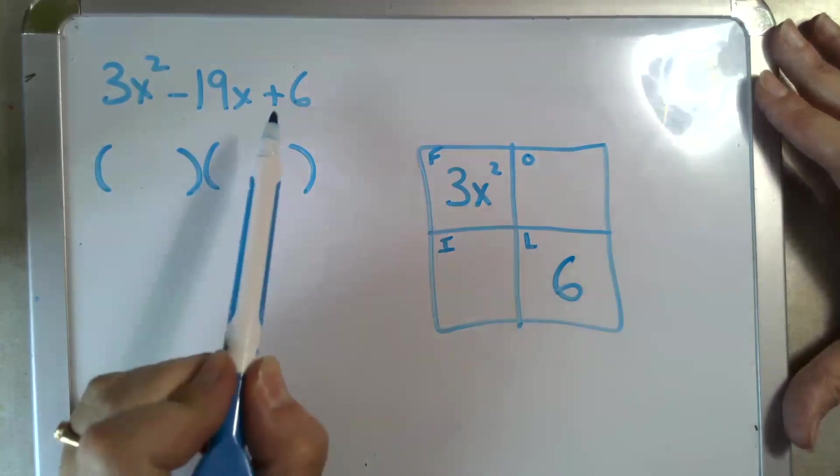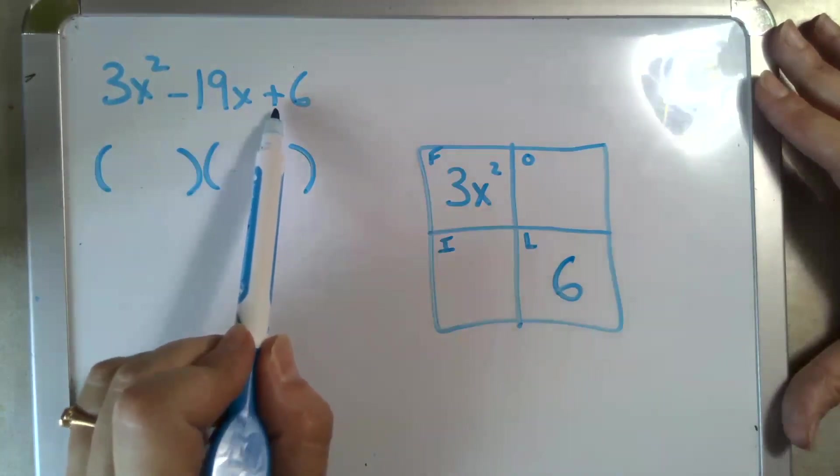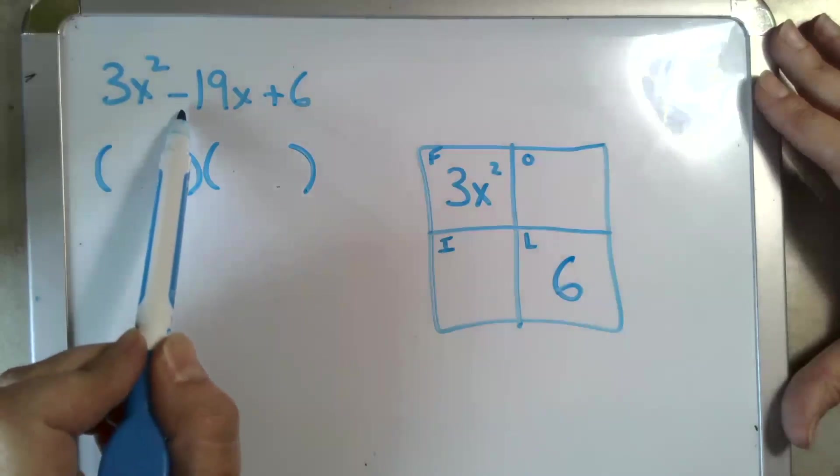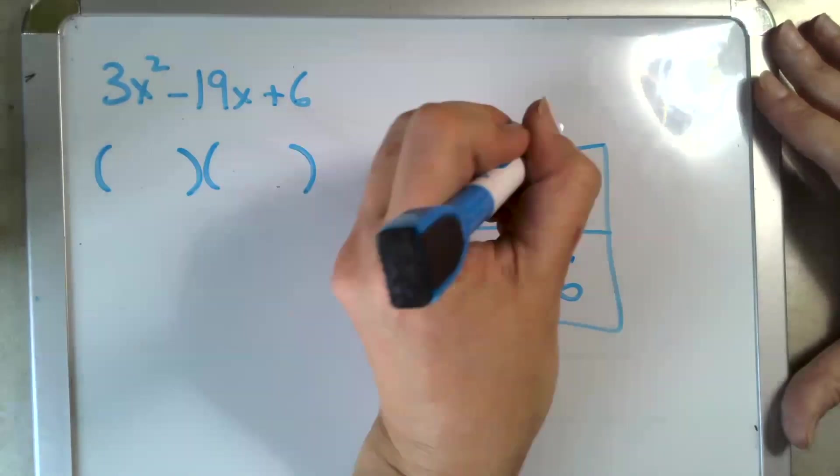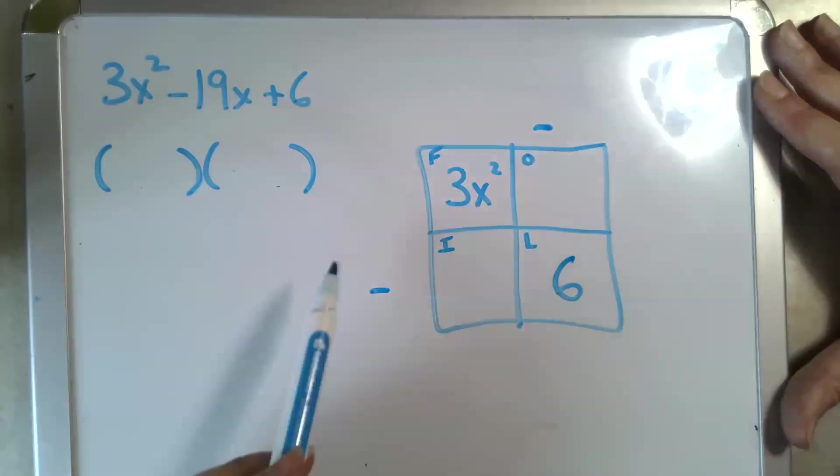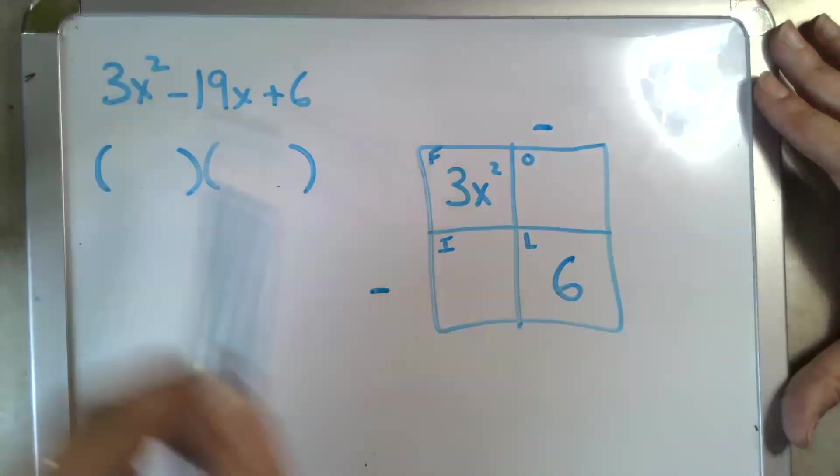We can see that because the constant is positive but the middle term is negative, we know that both second terms in the binomials are going to be negative. That way, a negative times a negative gives us positive 6, but this term will still wind up being negative.